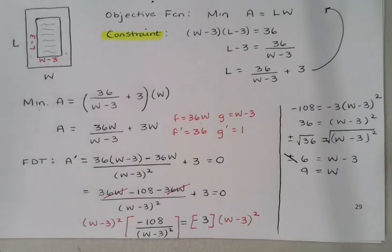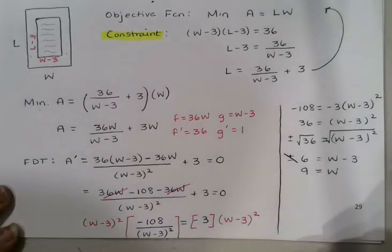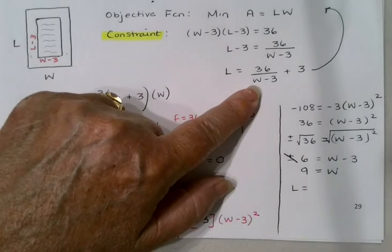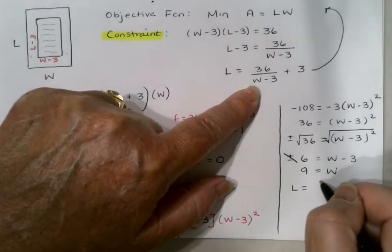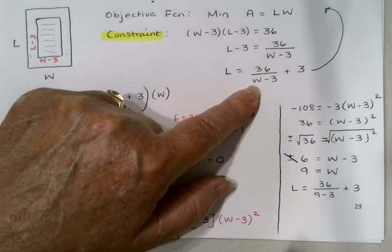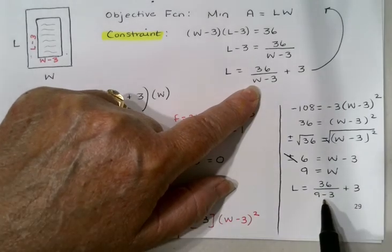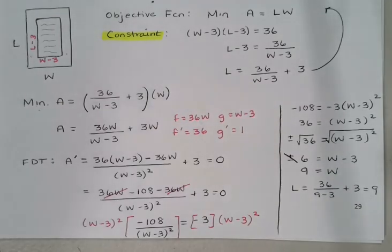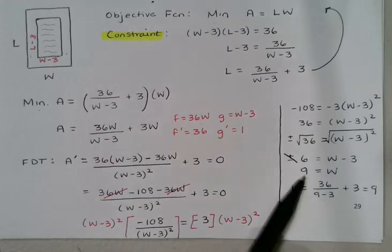I'm running a little low on space here, so I'm going to leave it to you this time to go back and double check that that really is a minimum. I think you'll find that it is. And I'm just going to say the width is 9. So to get the length I'll plug 9 in here. 36 divided by 6 would be 6, and 6 + 3 is 9. So once again our best situation here would be to use a square sheet of paper, 9 inches by 9 inches.